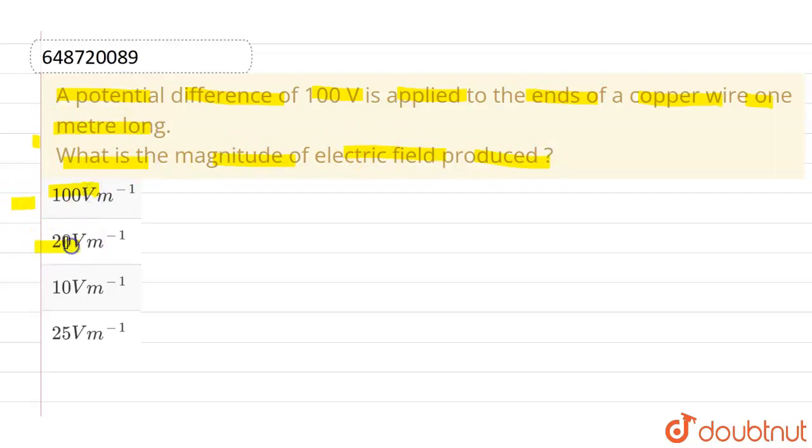100 volt per meter, 20 volt per meter, 100 volt per meter, 10 volt per meter, and the last option is 25 volt per meter.